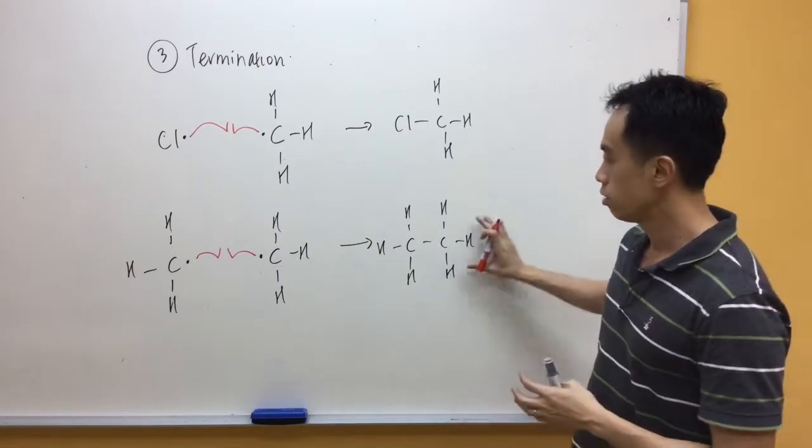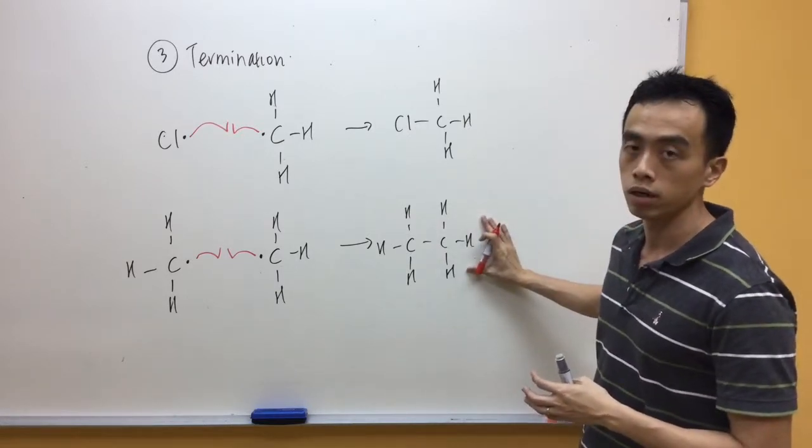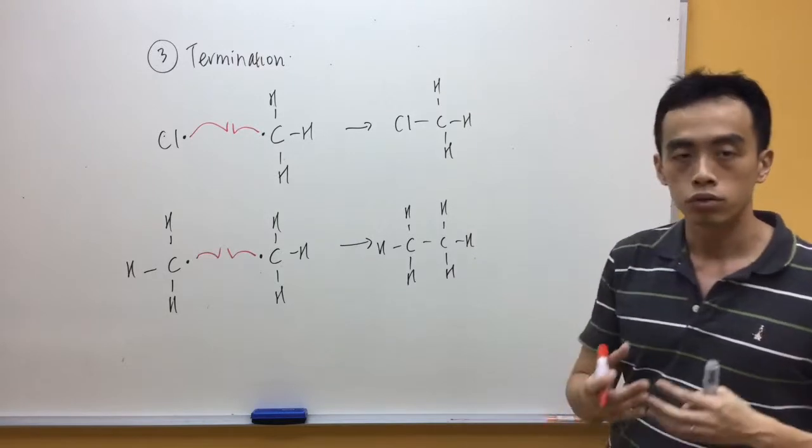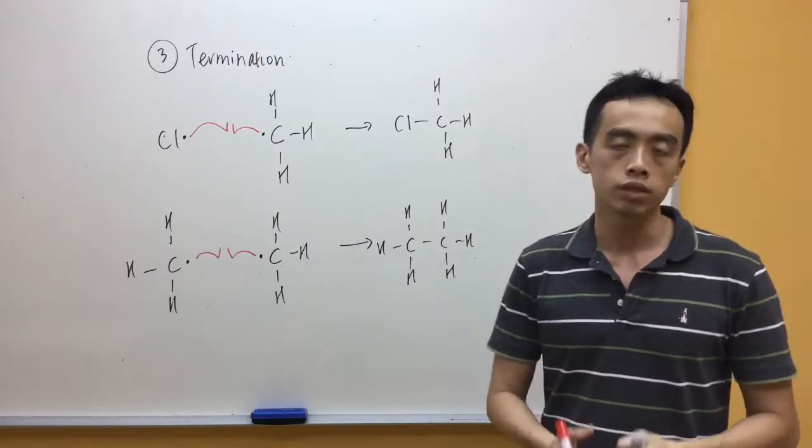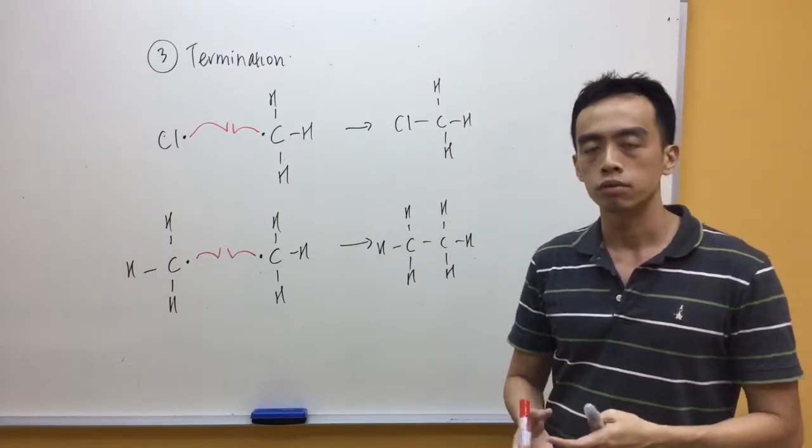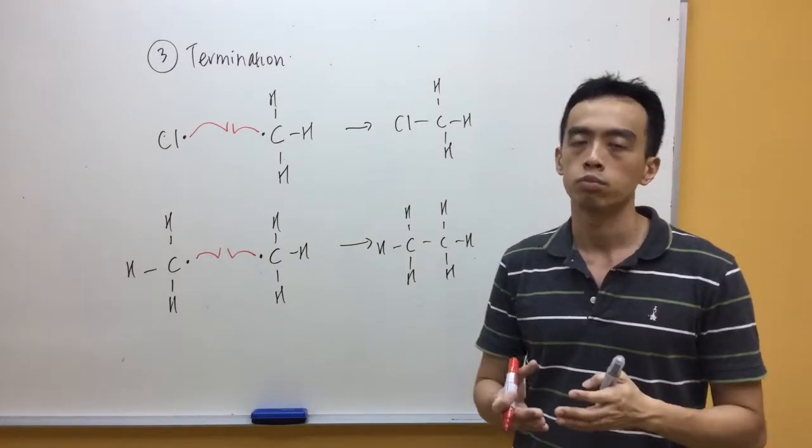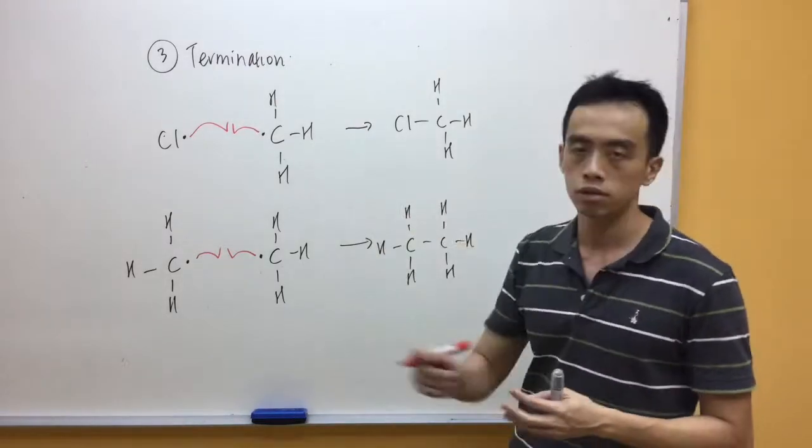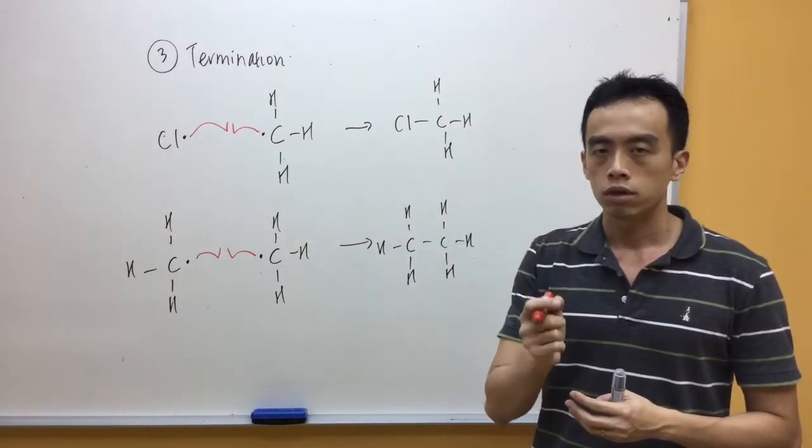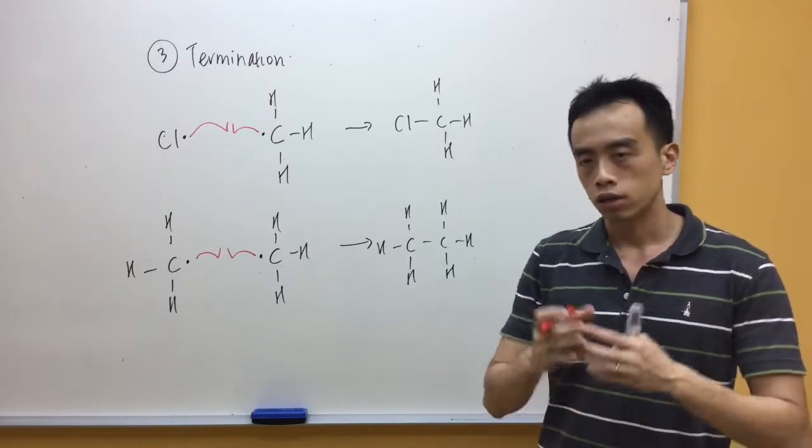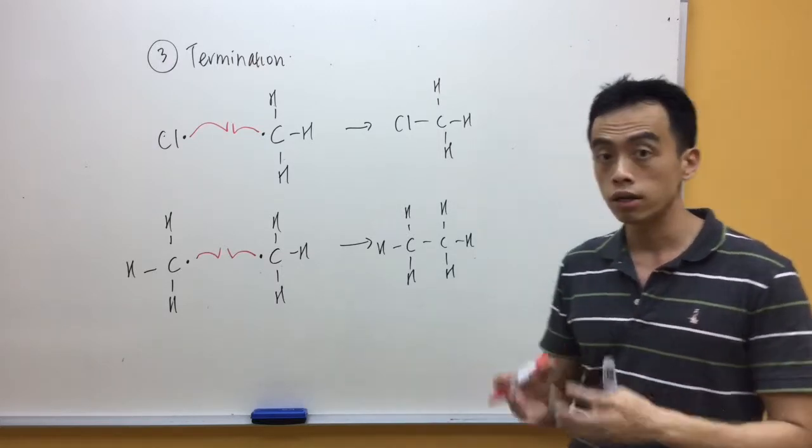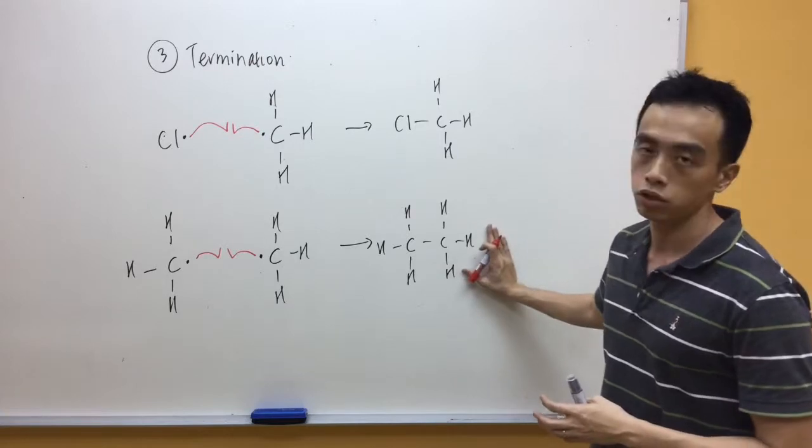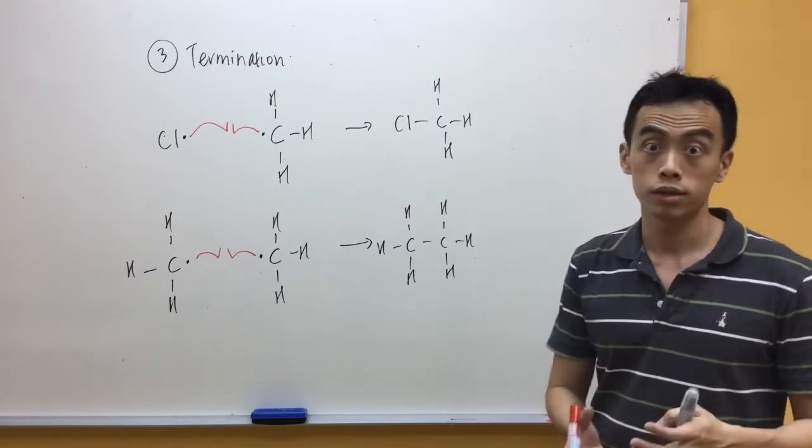So what this means is, this particular compound, where the number of carbon doubles is only found in trace amounts. Because again, for free radical substitution, the bulk of the reaction is propagation step. Termination is just a very very small percentage of the total number of steps involved. So anything that is only formed in the termination step is found in trace amounts.